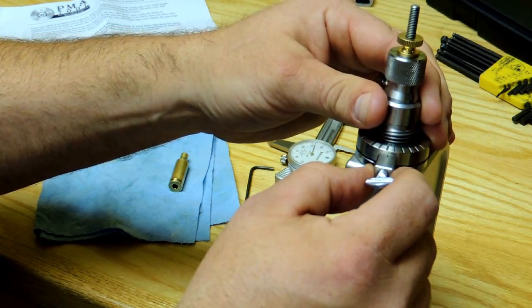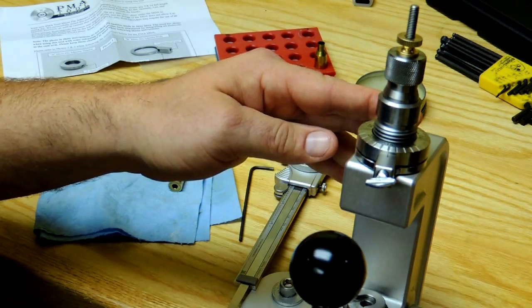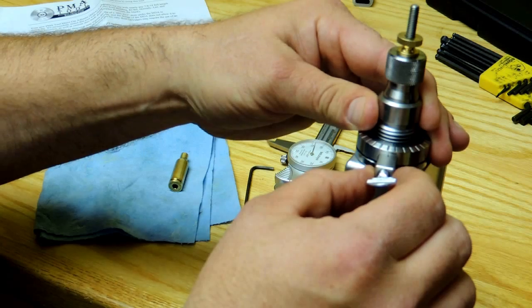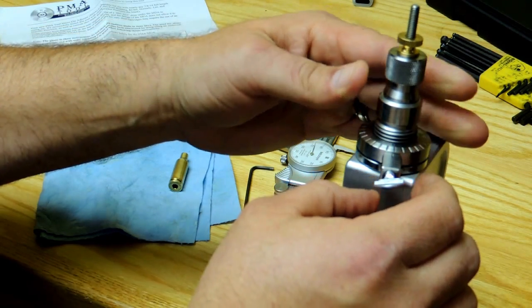Each mark on the micro die adjuster is one thousandth of an inch. There is ample space between the marks to make adjustments as fine as half a thousandth or even less.